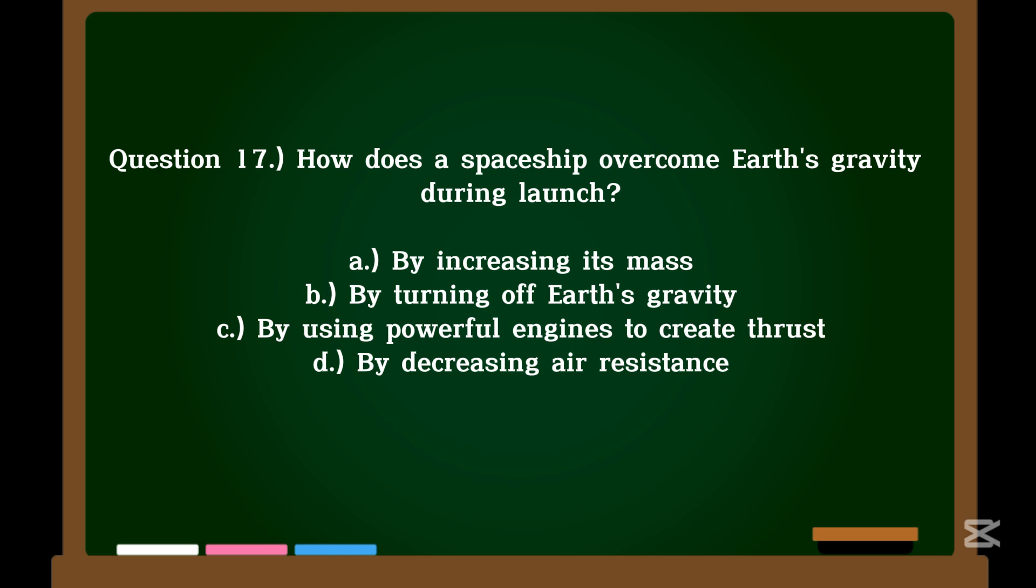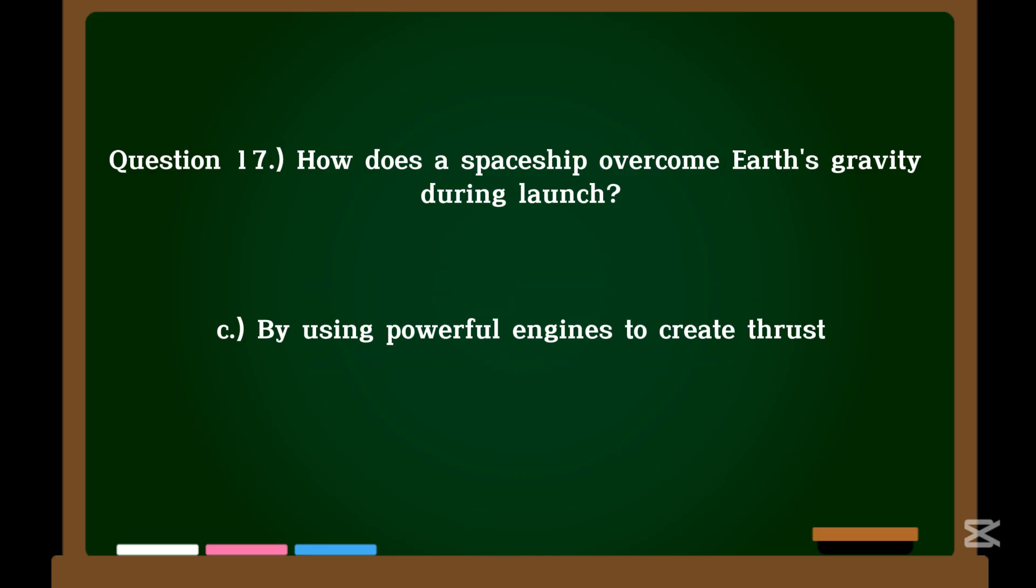Question 17. How does a spaceship overcome Earth's gravity during launch? A. By increasing its mass. B. By turning off Earth's gravity. C. By using powerful engines to create thrust. D. By decreasing air resistance. Correct answer: C. By using powerful engines to create thrust.